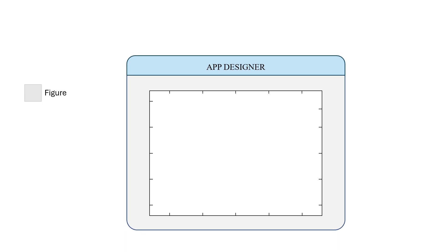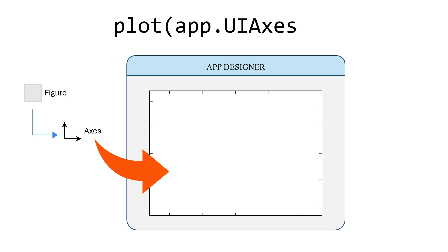MATLAB App Designer is slightly different. We already have the figure window and the axes window because we have already created them. We don't want our plot to appear just anywhere — we want it in this specific axes we created. For this, we have to add the axes as the first argument of the plot command. So we write: plot(app.UIAxes, X, Y), where UIAxes is the name of our axes, acting as the target for the resulting plot.